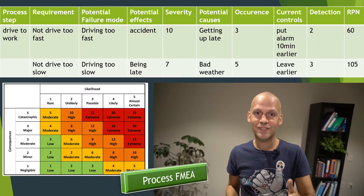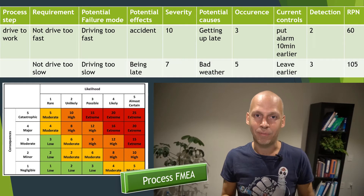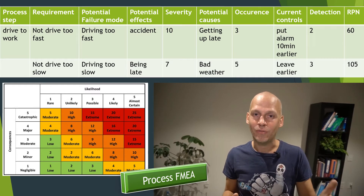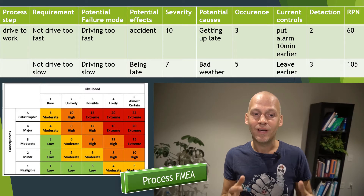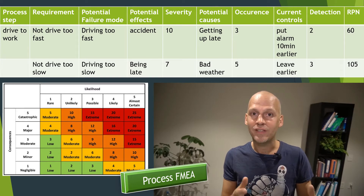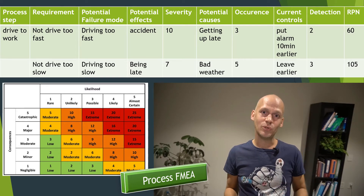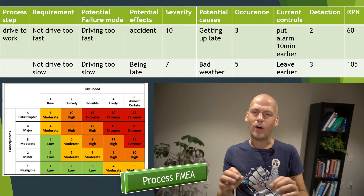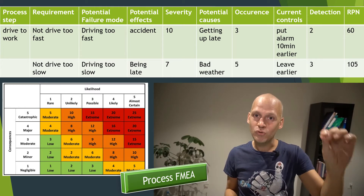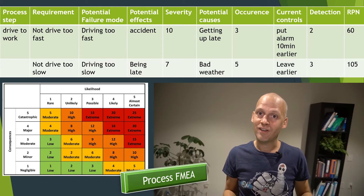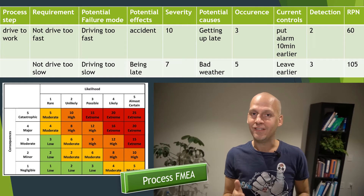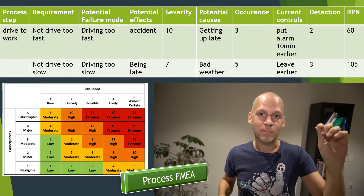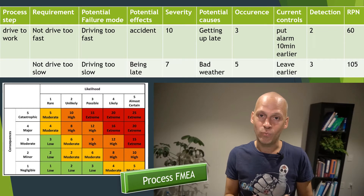Let us go into an example. Here I share on this table the example of driving to work. The first thing you do when you want to analyze your process is map it out — you say step one, two, three, four, five. In this case I only use step number one: how I drive to work.